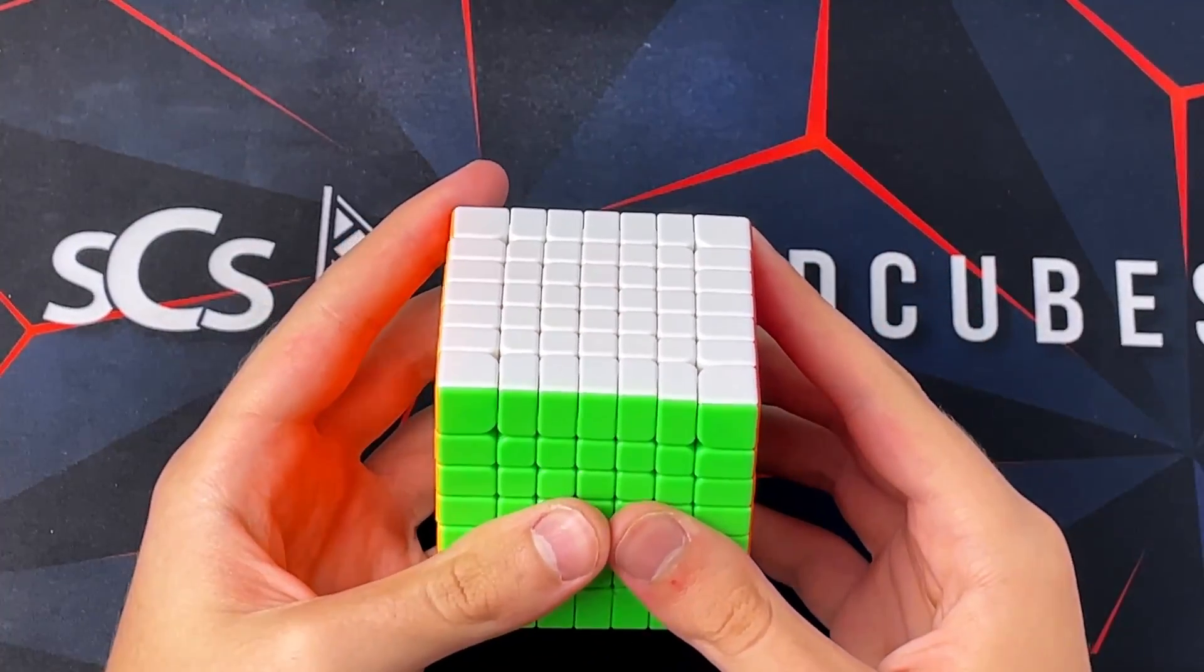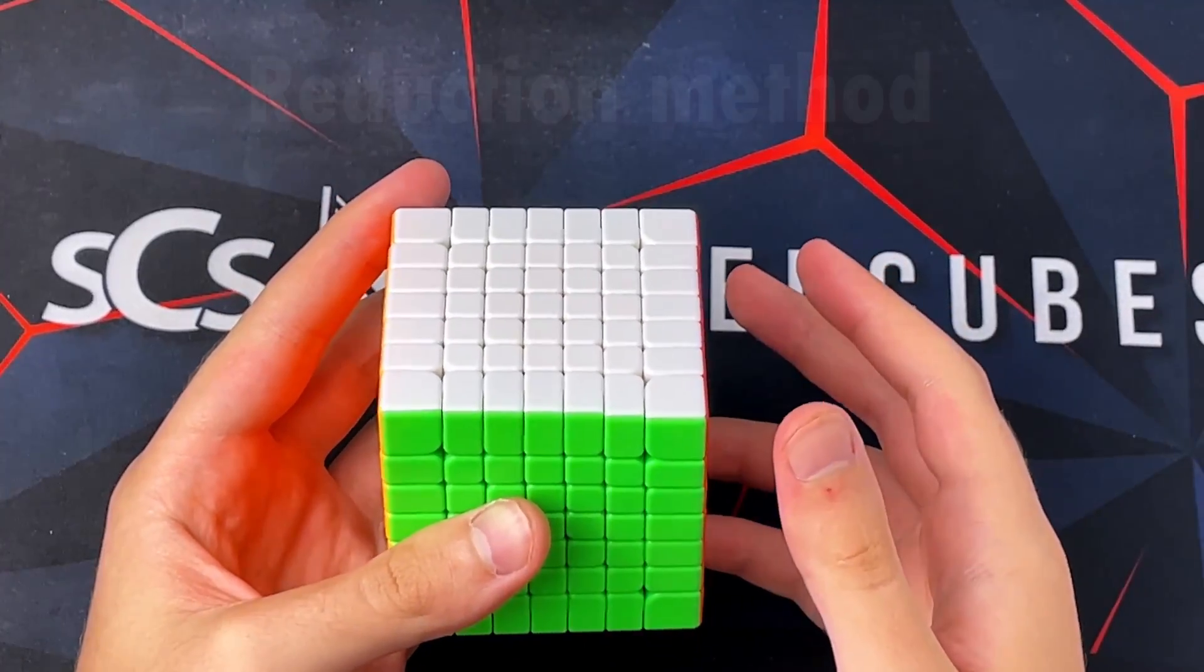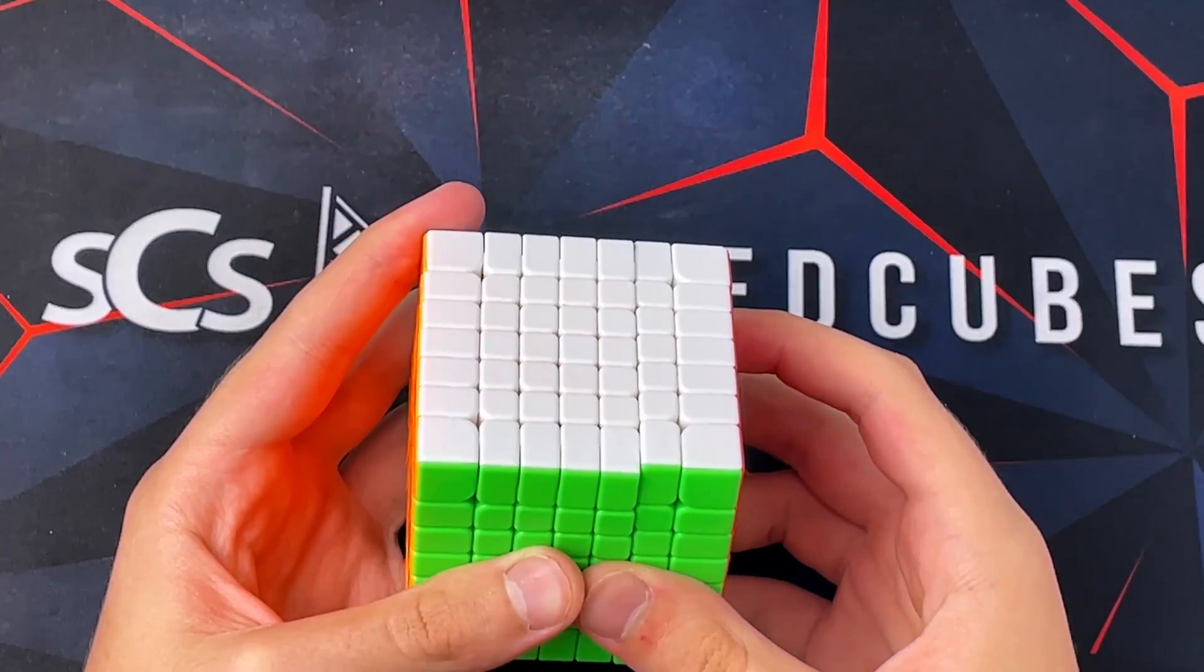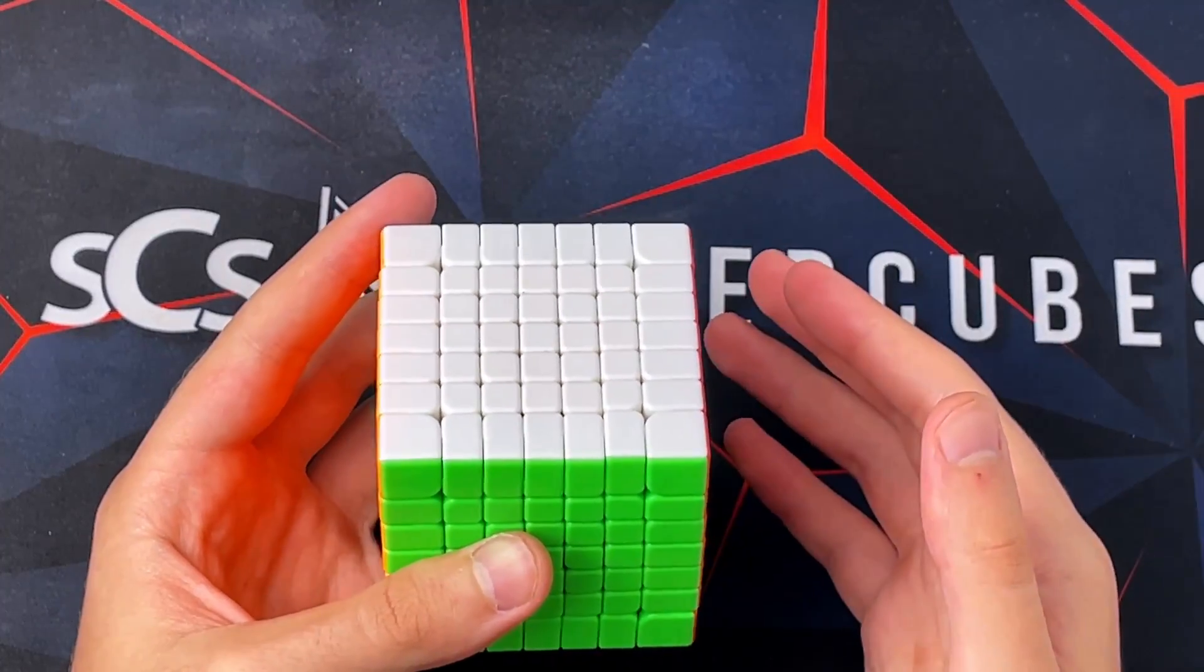The first thing you need to know, these are just requirements: you need to know the reduction method, and you can use Yao, but this tutorial will be for reduction, so some tips might not apply as well.